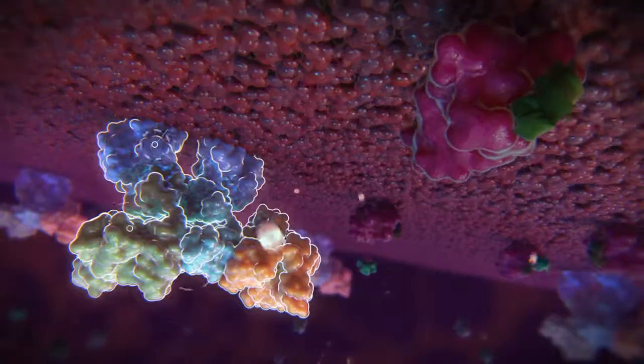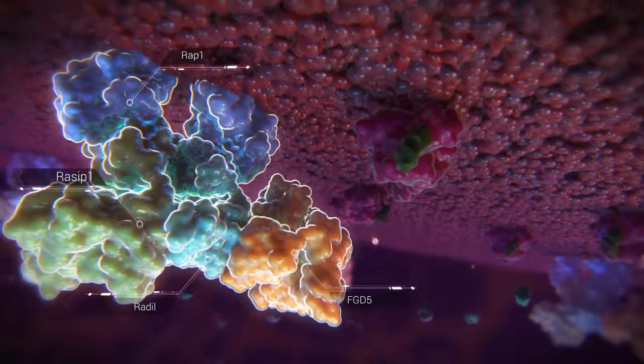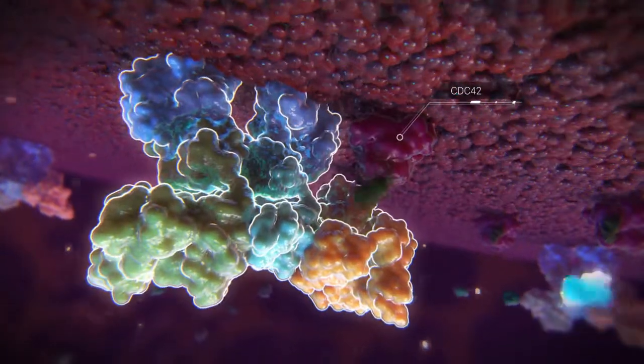Active RAP1 also recruits a similar complex with RASIP1 and RADIL, but now with FGD5 bound to RADIL.